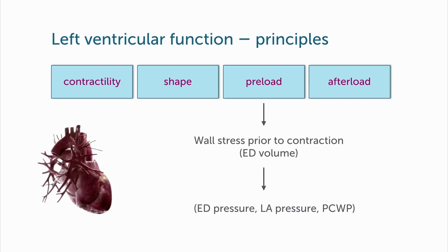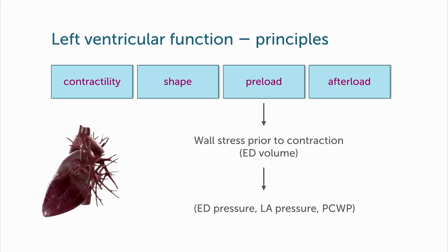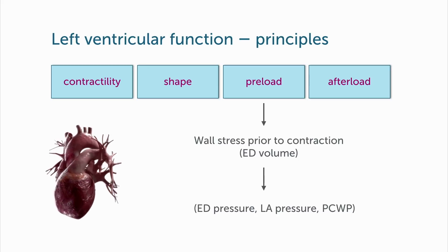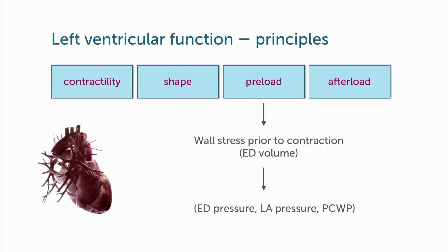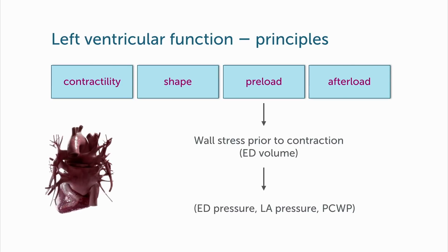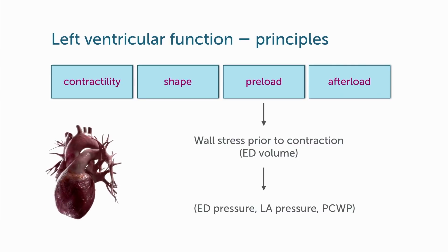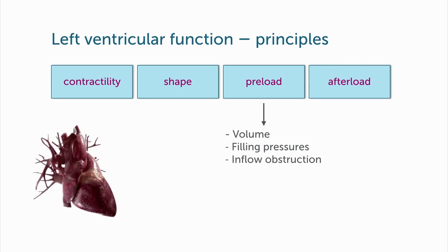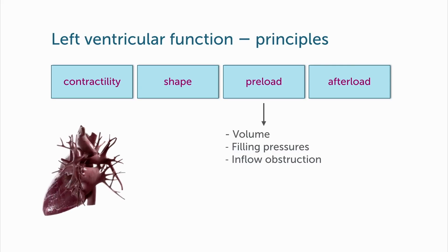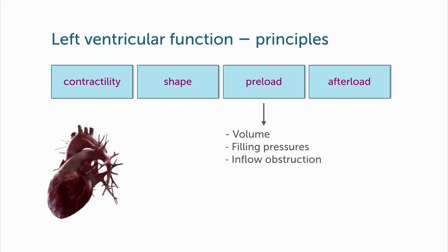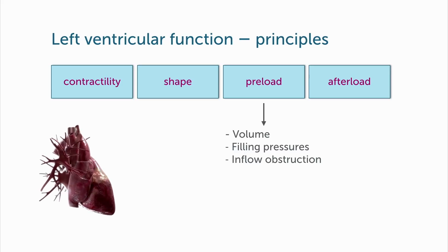Preload also affects contractility. Preload is basically the amount of volume that is filled into the left ventricle. If you have a patient who has a high end-diastolic volume, then the preload will be increased. If the patient is hypovolemic, the preload will be reduced. So volume, filling pressures, and inflow obstruction — for example, if a patient has mitral stenosis — will definitely influence the preload of the left ventricle.